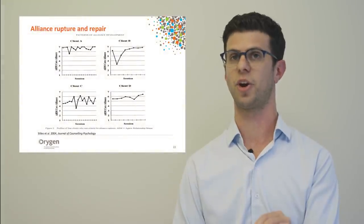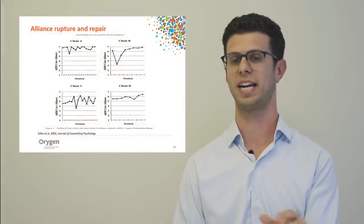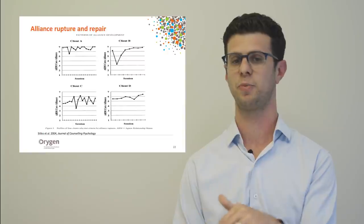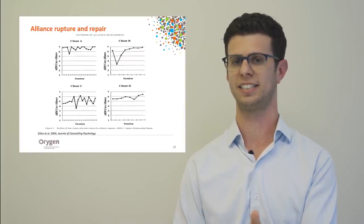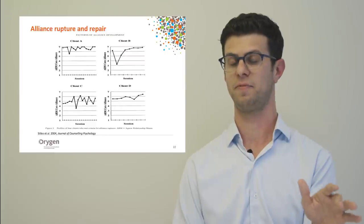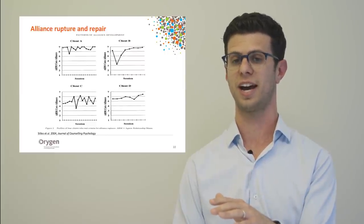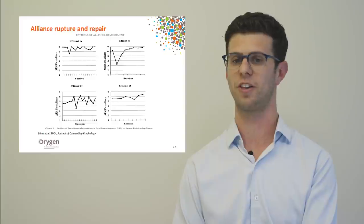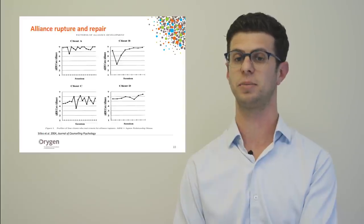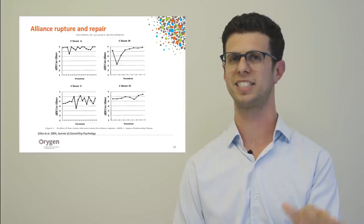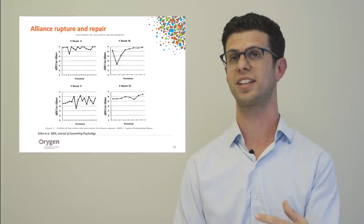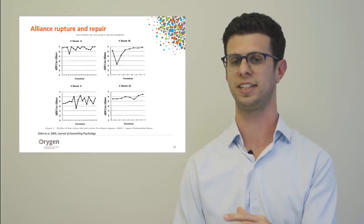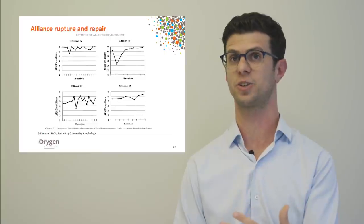Here are figures showing how alliance processes might play out over sessions, with alliance ratings on the y-axis and sessions on the x-axis. Client A shows a fairly good alliance throughout. Client B shows a rupture early on and then improvement. Client C shows a pattern of rupture and repair throughout therapy. Client D has a more stable trajectory — indicating it can look very different for every young person.